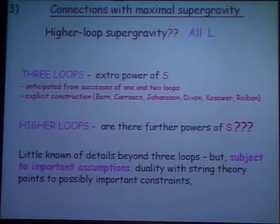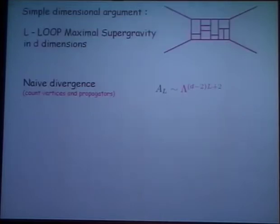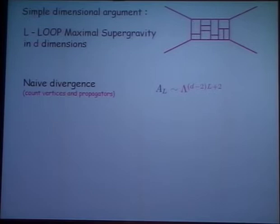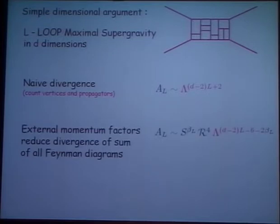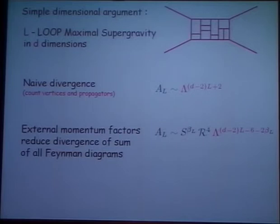So, by continuing to make these connections between supergravity and string theory, there are consistency conditions which — at least subject to very important assumptions — seem to constrain the possible powers of S. To get to that, let me begin by just a simple dimensional argument. Here is a generic L-loop diagram in supergravity, and it has a naive degree of divergence which is some power of lambda — which I've mentioned already. That's very naive, because in fact there will be a power of R to the fourth outside at the front, which is eight powers of momentum, and then there will be some unknown power of S depending on the number of loops, which will reduce the divergence. So the whole question is: what is the value of beta_L at any loop order?